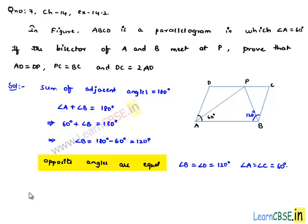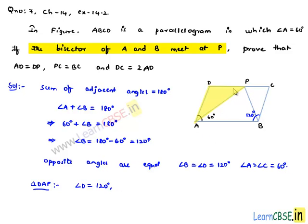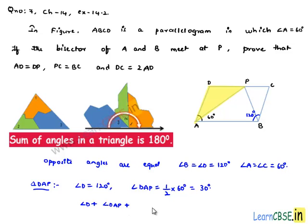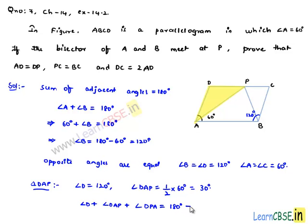Now let us consider the angle sum property in triangle DAP. Angle D is equal to 120 degrees, and it is said that AP is a bisector of angle A. So angle DAP will be half of angle A, that is half of 60 degrees, which is equal to 30 degrees. Now applying the angle sum property in triangle DAP, we get angle D plus angle DAP plus angle DPA is equal to 180 degrees.